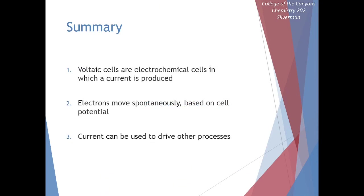Voltaic cells can produce electrical current based on their various electrical potentials. Different half reactions have different electrical potentials, and we can do those calculations. Thank you very much for being here. I look forward to seeing you in the next video, and until then, have a great day.